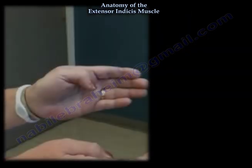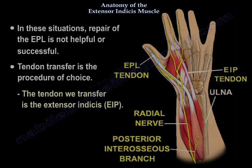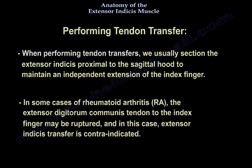The patient will not be able to extend the thumb because of the ruptured extensor pollicis longus tendon. In these situations, direct repair is not helpful or successful, so tendon transfer is the procedure of choice. The tendon we transfer is the extensor indicis, and we usually section it proximal to the sagittal hood to maintain independent extension of the index finger.